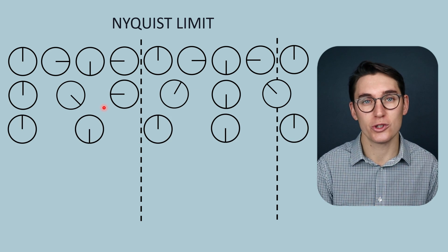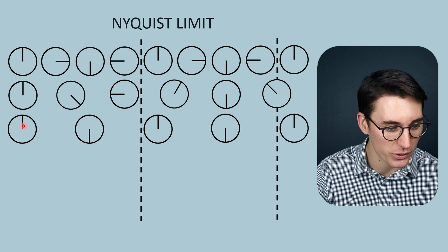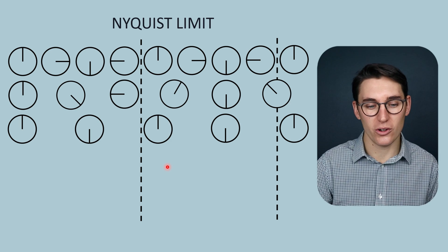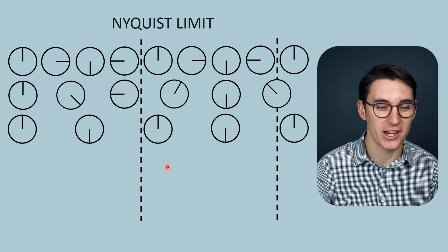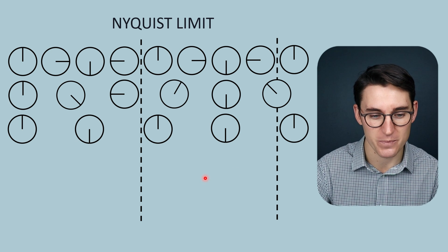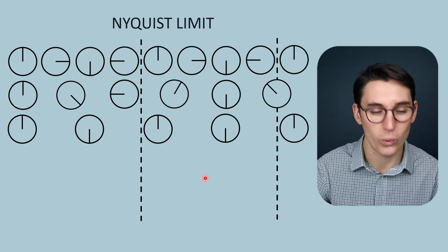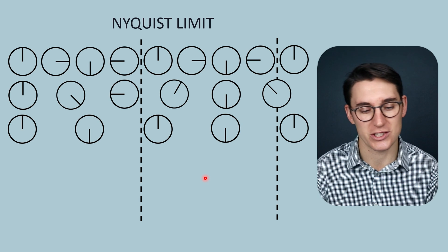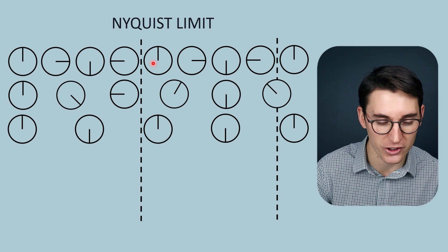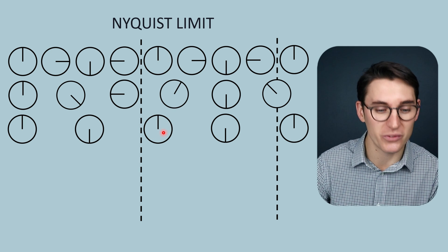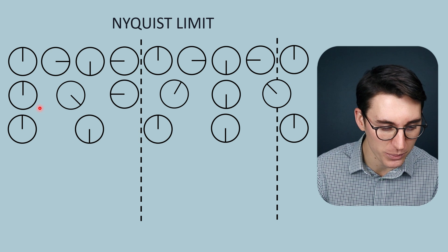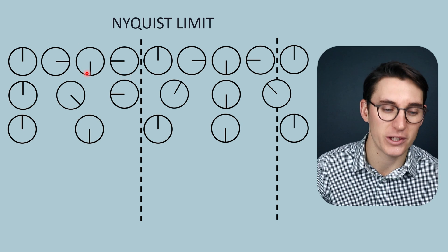Now what if we reduce that sampling rate to two samples per cycle? The spoke is going 180 degrees from itself each sample. We have no longer got the ability to calculate which direction this wheel is turning — the spoke will just be turning on its axis. We don't know if the wheel is turning anti-clockwise or clockwise. We can still calculate the frequency because the spokes accurately match up with the original frequency, but we've lost direction. We've reached what is known as our Nyquist limit: the sampling rate is twice that of the frequency of the wheel.